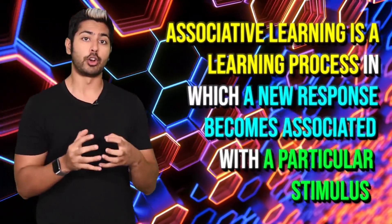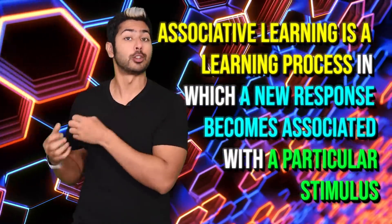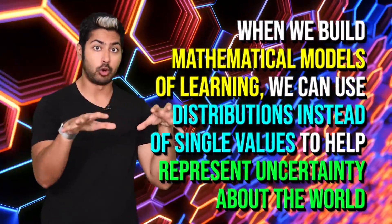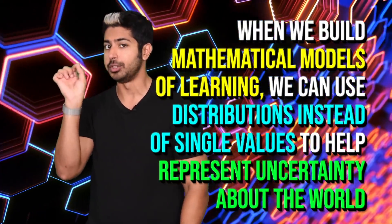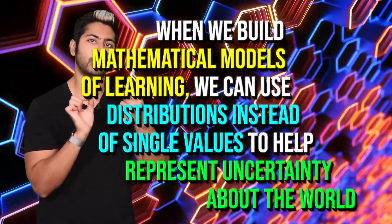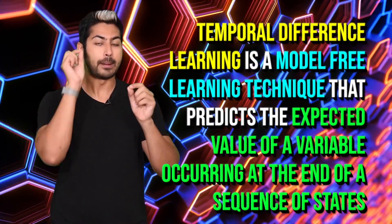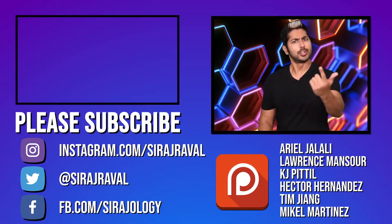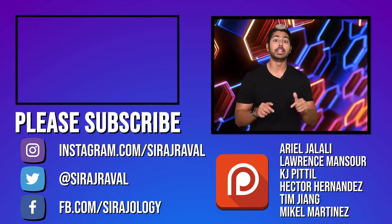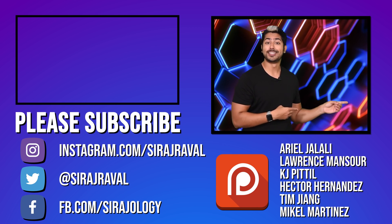Here are the three points to remember from this video. Associative learning is a learning process in which a new response becomes associated with a particular stimulus. When we build mathematical models of learning, we can use distributions instead of single values to represent uncertainty about the world. And temporal difference learning is a model-free learning technique that predicts the expected value of a variable occurring at the end of a sequence of states. Hit subscribe and thanks for watching.